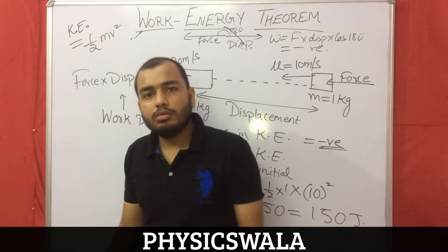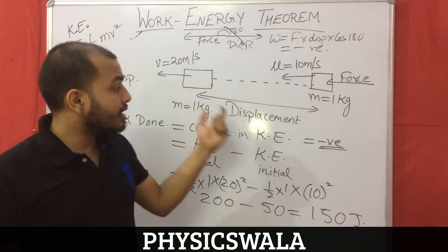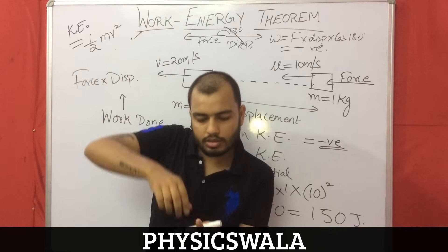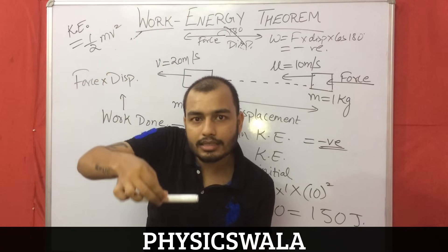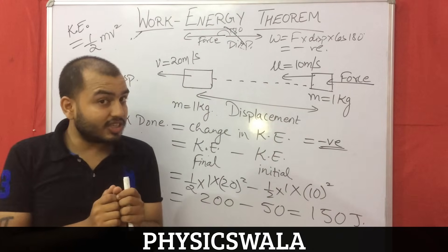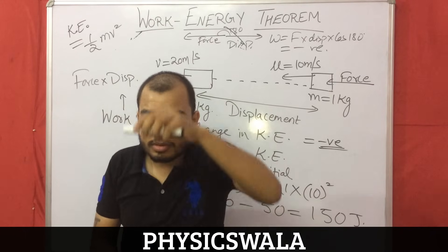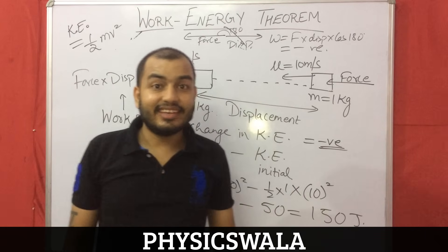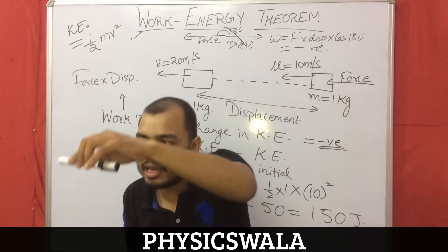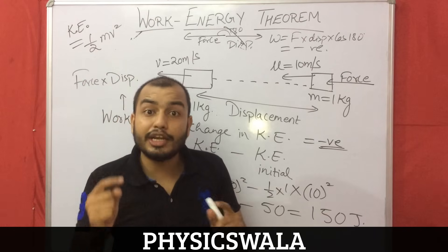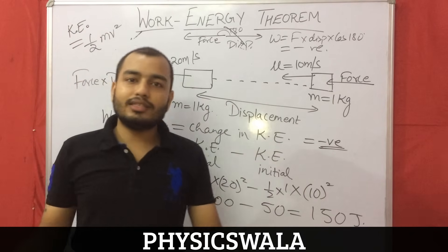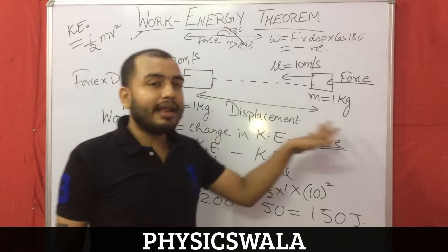Whatever work you do, whether positive or negative, will result in a change in kinetic energy. I drop this object — when I drop it, its speed increases as it goes down. That means there is a change in kinetic energy. Who is doing the work? Gravity. The force of gravity acts downwards and it displaces the object in the downward direction, doing work which results in an increase in kinetic energy. So this is the summary of the work-energy theorem: work done is equal to change in kinetic energy.